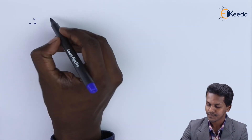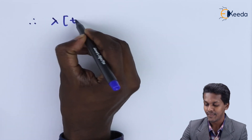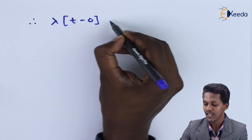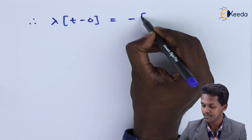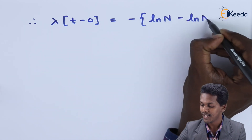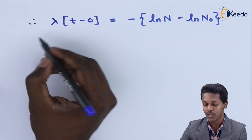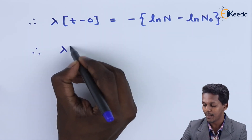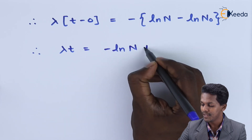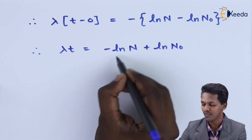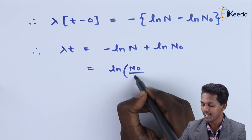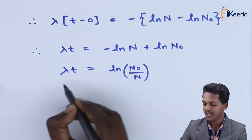Therefore we get: lambda times (t minus 0), that is lambda·t, equals minus [ln(n) minus ln(N₀)]. This simplifies to lambda·t equals minus ln(n) plus ln(N₀), which can be written as lambda·t equals ln(N₀/n).